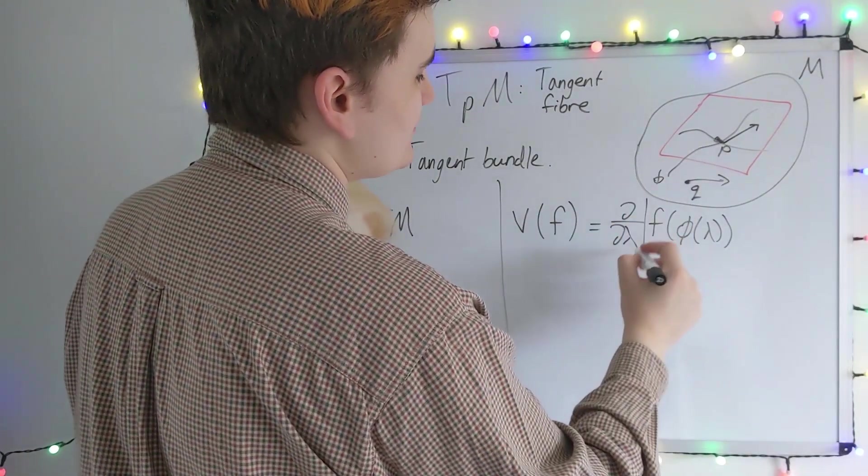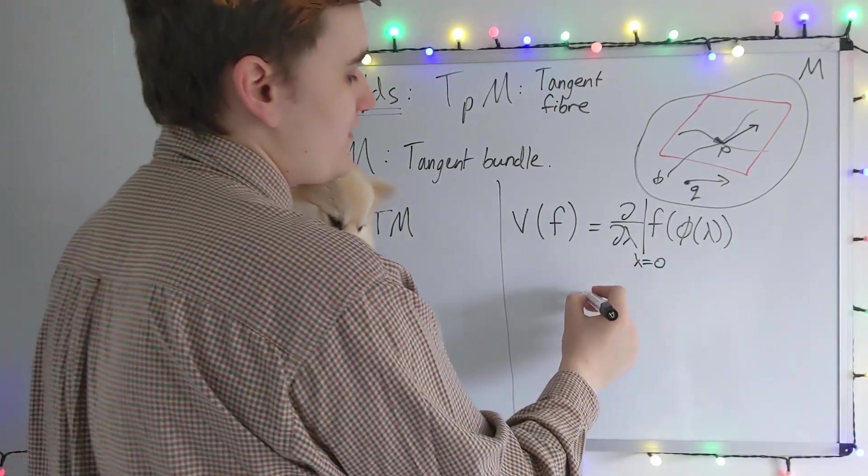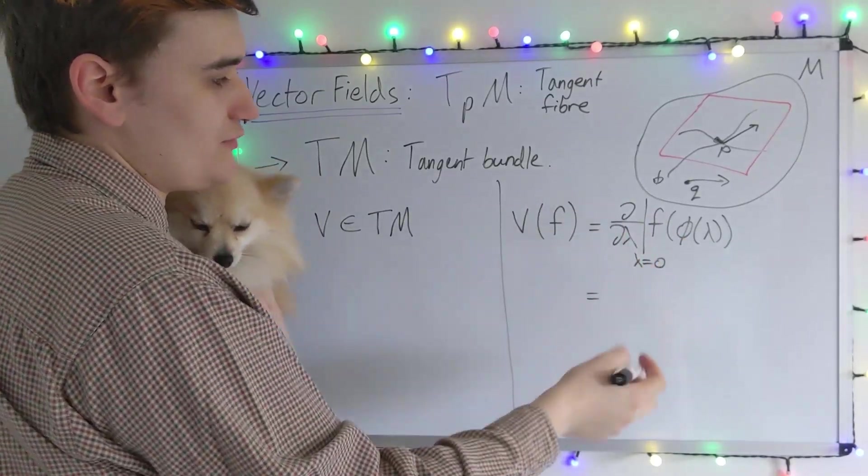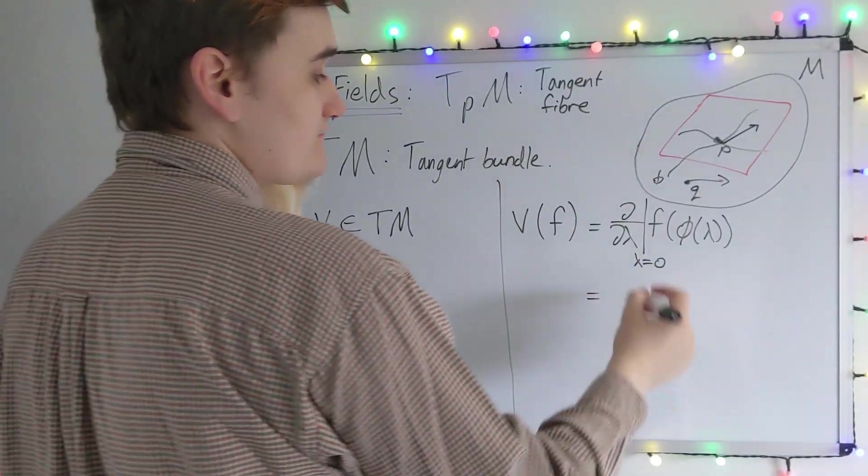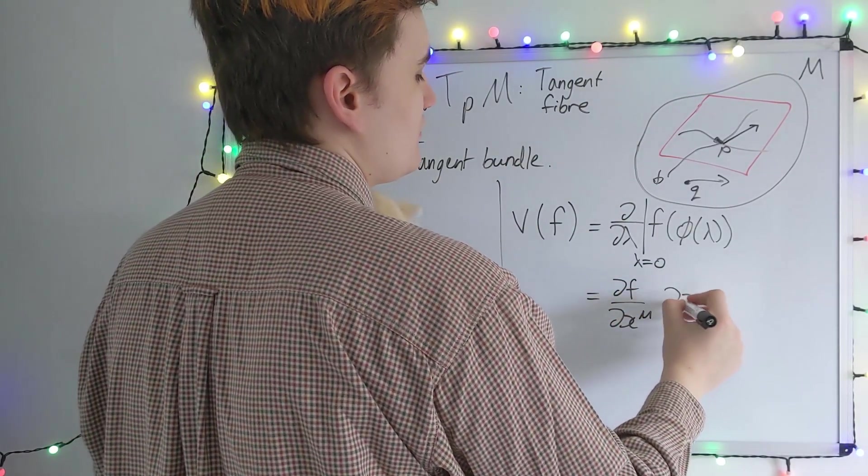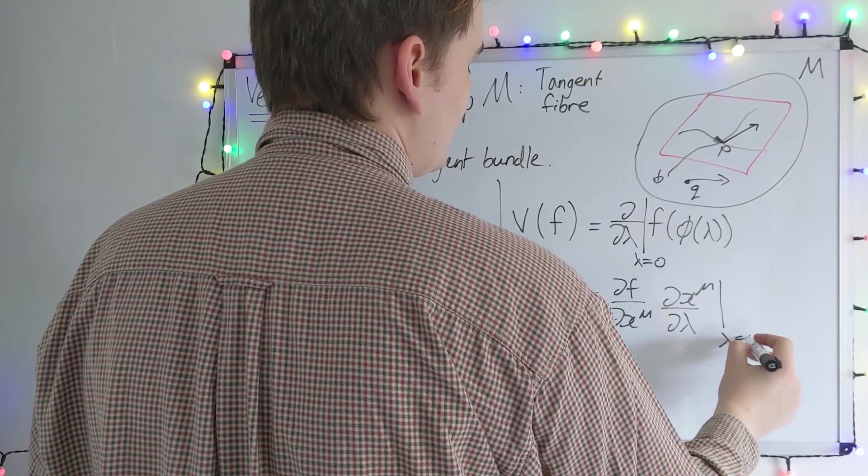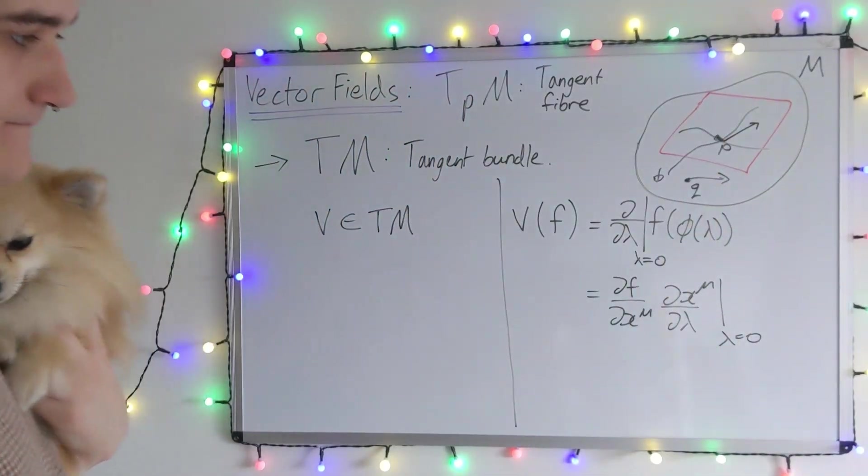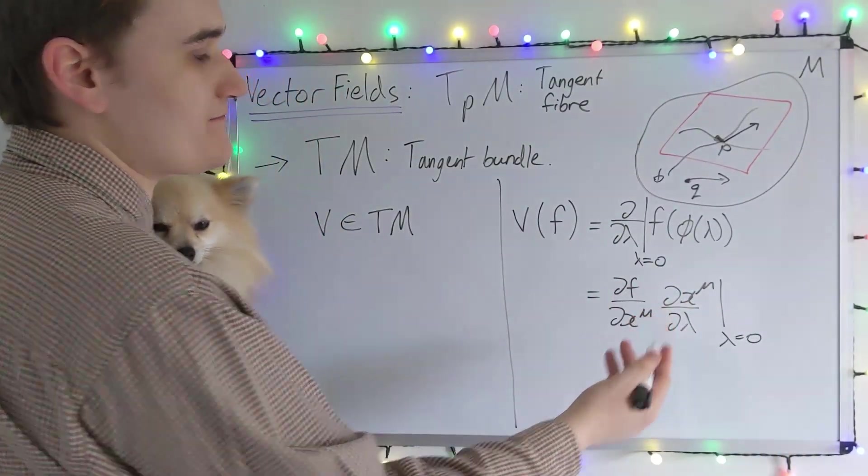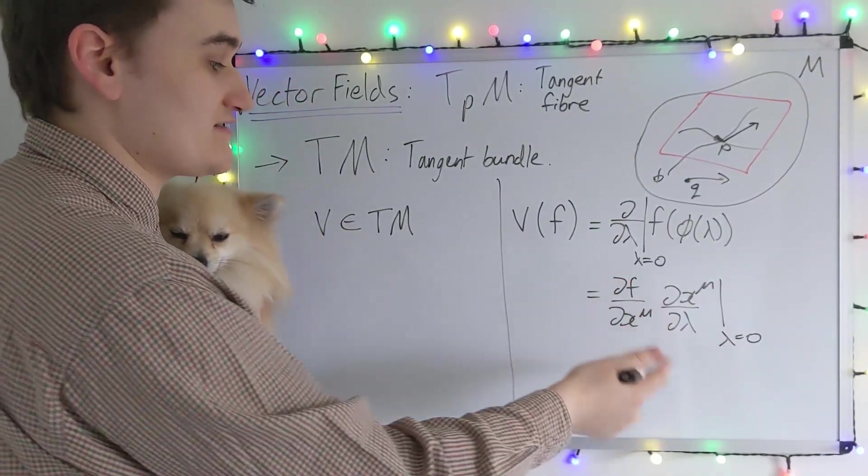When I was writing this down, you'll recall that I told you we need to evaluate this at the point we're talking about. I could rearrange this whole thing and get it in terms of, rather than the phi curve, which lives on the manifold, we can talk about this in terms of the chart entirely. We could rewrite the function in terms of this thing, x mu, which was the image of the curve in the chart. We have to evaluate this all again at the point p. These dx mu by d lambdas, these are effectively the components of the vector in the chart.